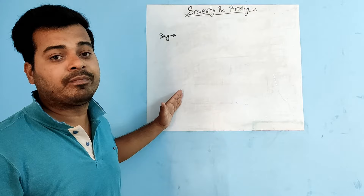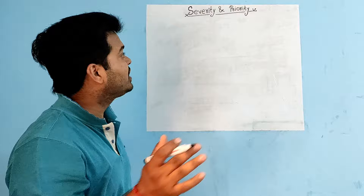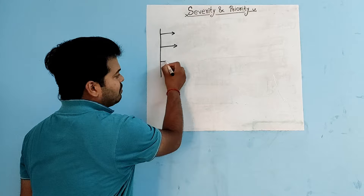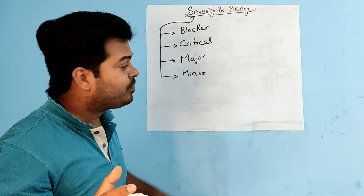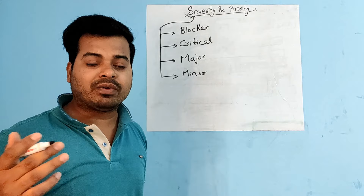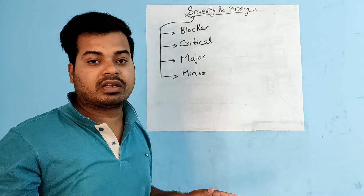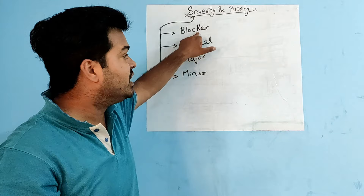Now let's talk about the types of severity. We have four types: Blocker, Critical, Major, and Minor. When you raise a bug and say it is blocker severity, you are telling that the impact of this bug on the customer business workflow is a blocker — meaning if we don't fix this bug, the customer won't be able to proceed further.